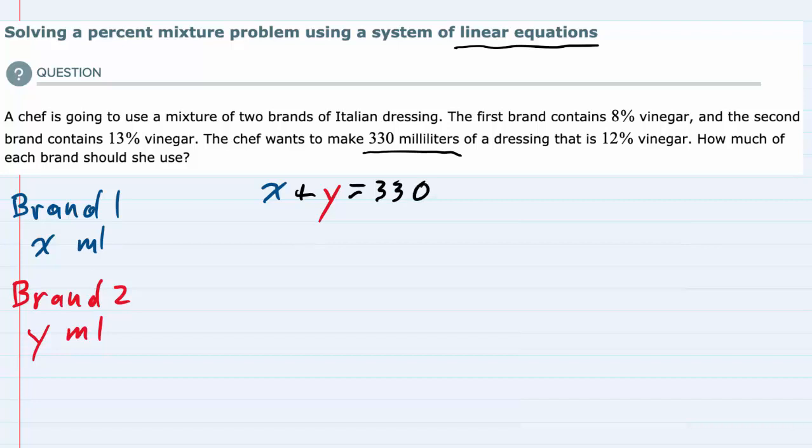To get the second equation, I need to look at the actual amount of vinegar. For brand one, it's an 8% mixture of vinegar, so 0.08 times x. Brand two is 13% vinegar, so that's 0.13 times y.